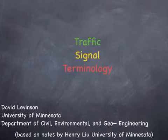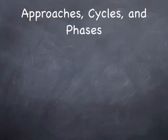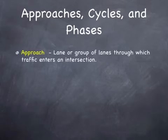This lecture will overview some jargon and terminology used in traffic engineering. We have an approach — that's the set of lanes that are coming into a particular intersection from a given direction. So there might be an eastbound approach of traffic that is moving eastbound in an easterly direction.